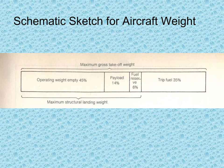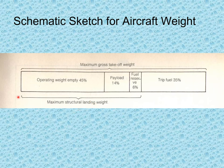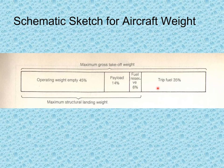The schematic sketch of aircraft weight shows that maximum gross takeoff weight consists of operating empty weight, payload, reserve fuel, and trip fuel. Maximum structural landing weight = operating empty weight + payload + reserve fuel. Approximate proportions: operating empty weight ≈ 45%, payload ≈ 14%, fuel reserve ≈ 6%, trip fuel ≈ 35%.